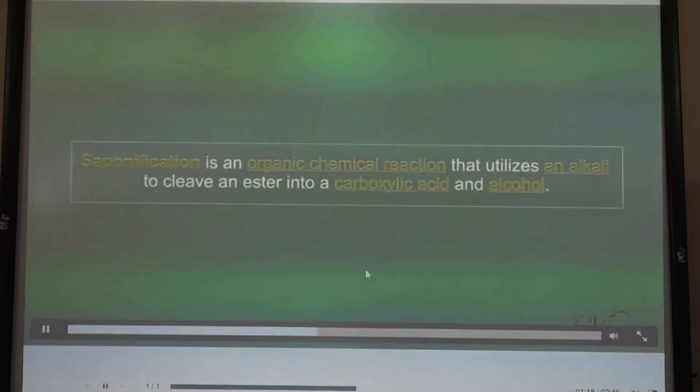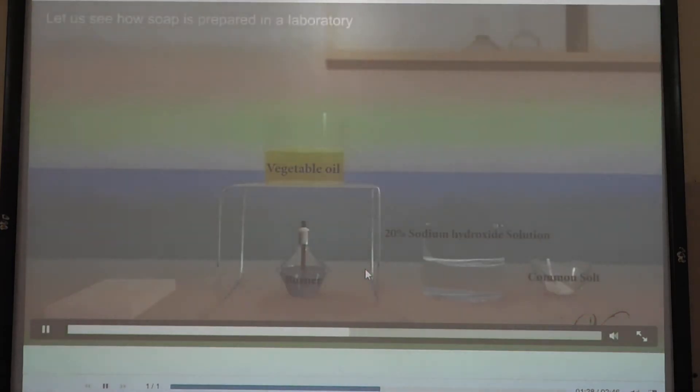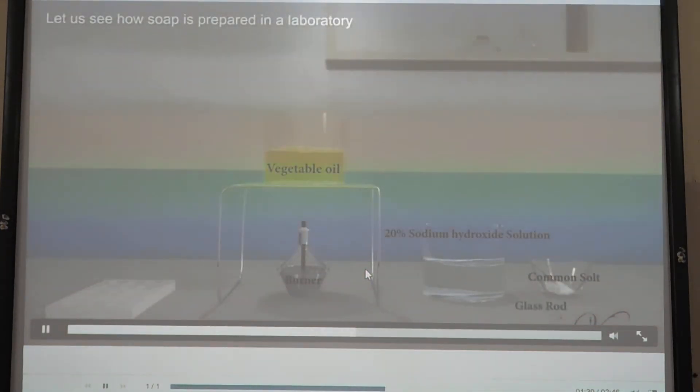Saponification is an organic chemical reaction that utilizes an alkali to cleave an ester into a carboxylic acid and alcohol. Let us see how soap is prepared in a laboratory.